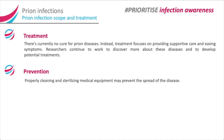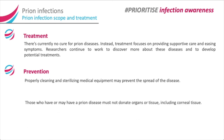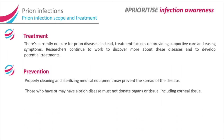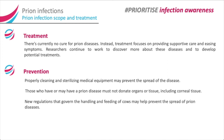Prevention: properly cleaning and sterilising medical equipment may prevent the spread of disease. Those who have or may have a prion disease must not donate organs or tissue, including corneal tissue. New regulations that govern the handling and feeding of cows may also help prevent the spread of prion diseases.